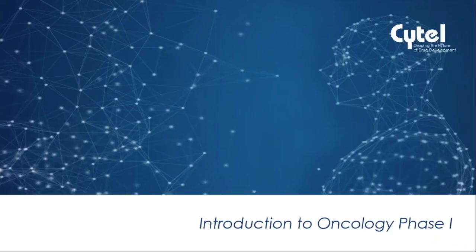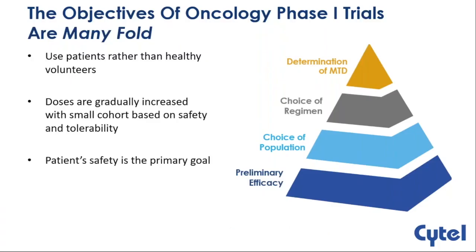In oncology, we have a somewhat different situation in phase one compared to other therapeutic areas, where we need to use patients rather than healthy volunteers — and not just patients, but really sick patients, mostly those who have failed almost all available therapies. This is the first time the compound is tested at a human level, so these are typically called first-in-human trials in oncology.